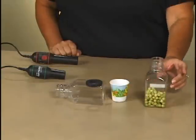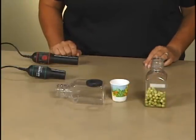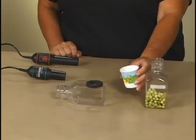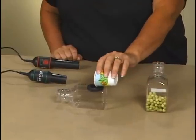I have some peas that have been soaking for a few days and have started to germinate. Measure out 20 to 25 peas and place them in the respiration chamber.